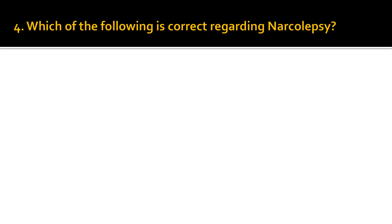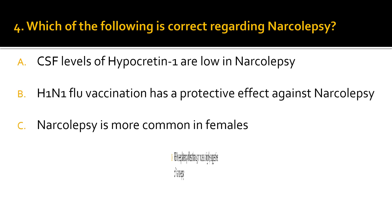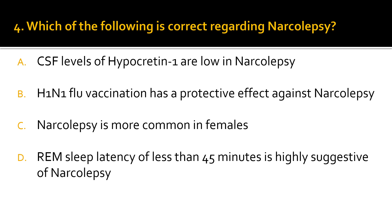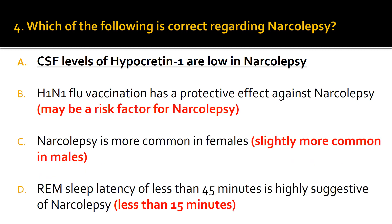Question 4. Which of the following is correct regarding narcolepsy? The correct answer is A: CSF levels of hypocretin-1 are low in narcolepsy. B is incorrect because H1N1 flu vaccination may be a risk factor for narcolepsy. C is incorrect because narcolepsy is slightly more common in males. D is incorrect because REM sleep latency of less than 15 minutes is highly suggestive of narcolepsy.